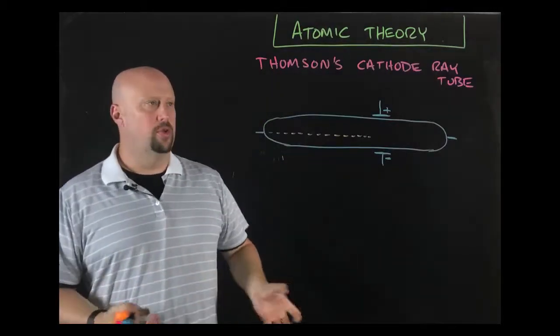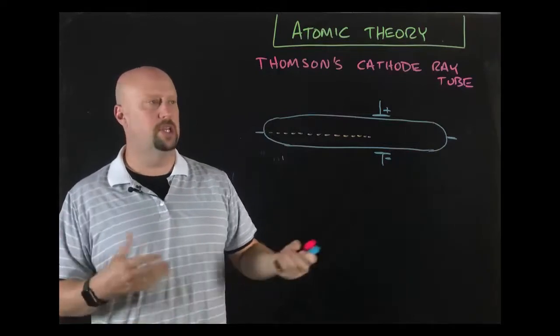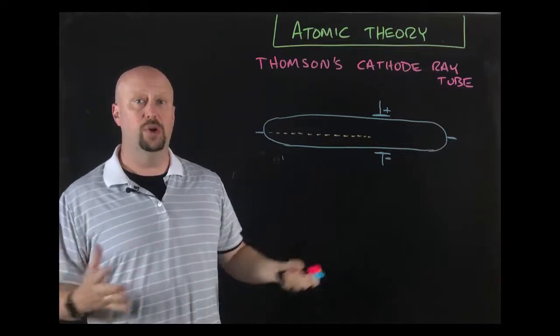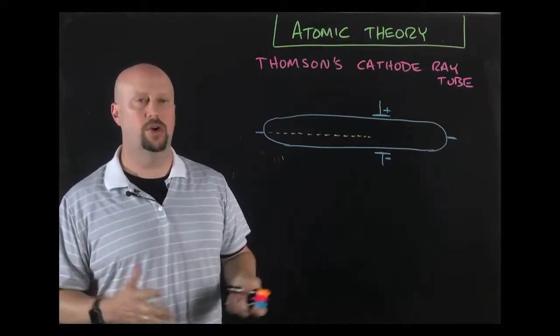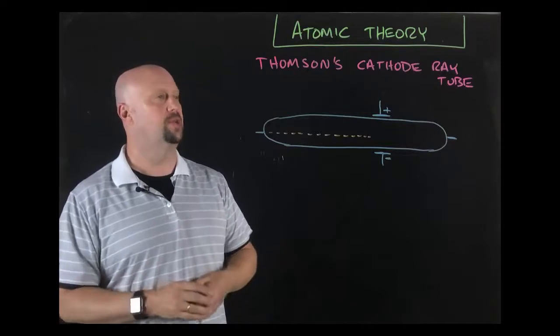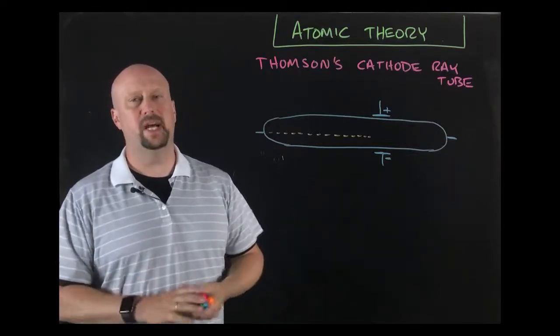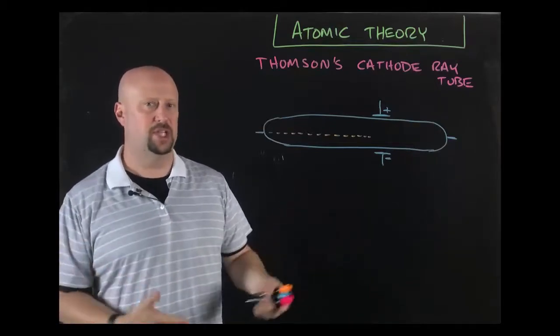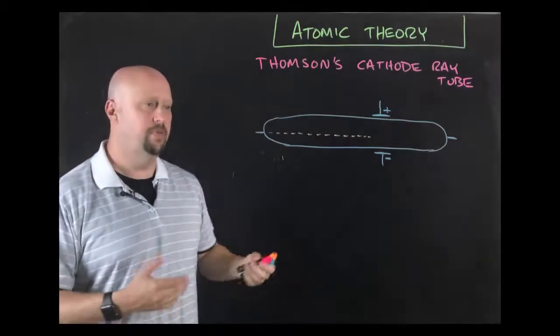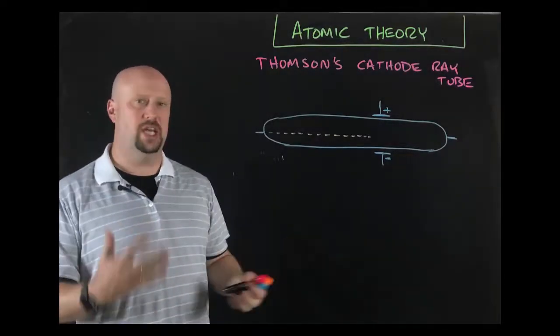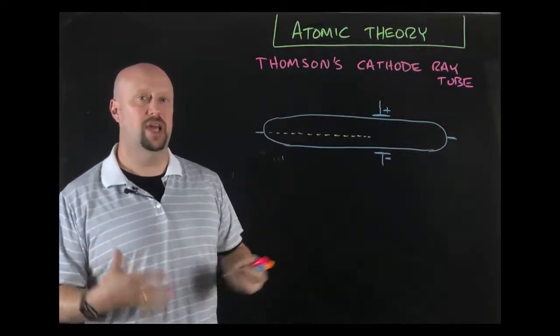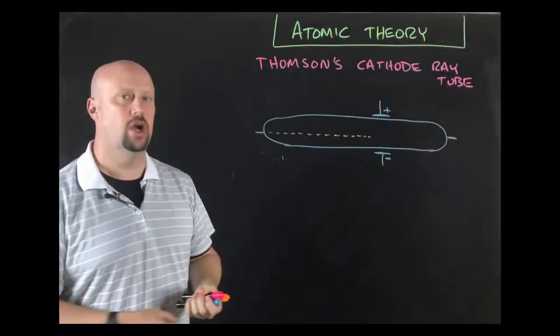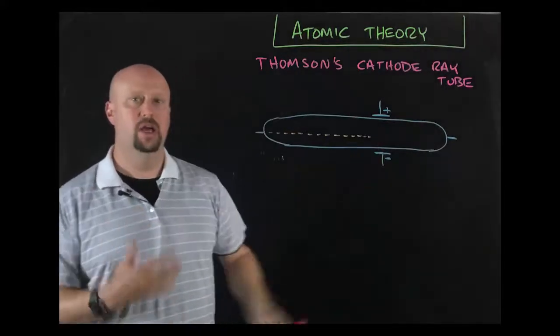Our next model comes from Thompson. Thompson does this experiment called the cathode ray tube experiment - a really fundamental experiment you need to know. This is in 1897. Remember Dalton's back in the 1700s, so a hundred years passed. Lots of stuff has happened for chemistry, but for atomic theory they didn't really have the instrumentation until the advent of electricity.